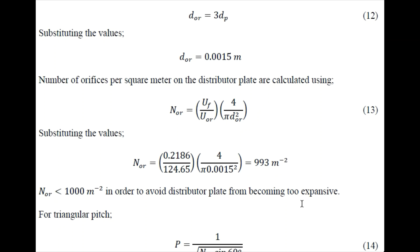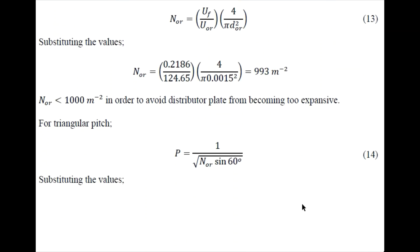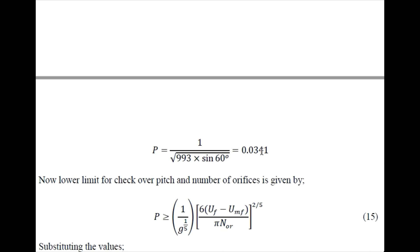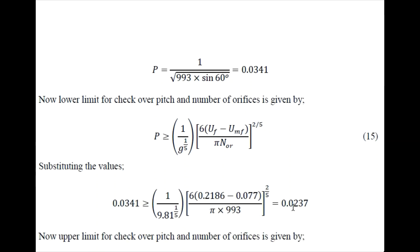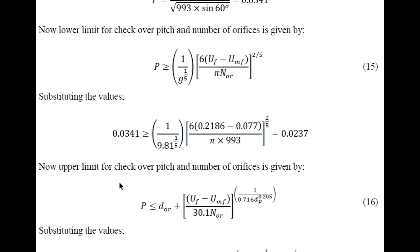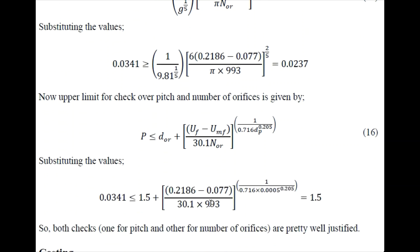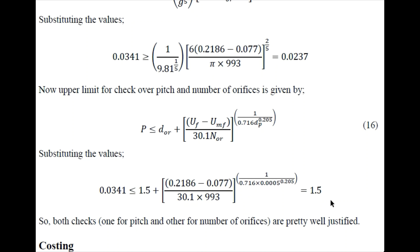Now for triangular pitch we can use this formula, from that we obtain it as 0.0341. Now for lower limit checking we need to use this formula, so substituting these values we obtain the limit as 0.0237, which is less than 0.0341. Now for upper limit, p should be less than this value that is obtained by substituting these values. Once we substitute these values it comes out to be 1.5. We know that p value is less than 1.5, so it shows that both of the checks are well justified.